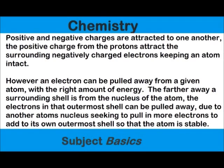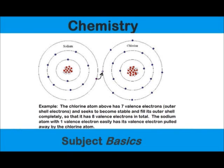However, an electron can be pulled away from a given atom with the right amount of energy, and the farther away a surrounding shell is from the nucleus, the electrons in that outermost shell can be pulled away or shared due to another atom's nucleus seeking to pull in more electrons to add to its own outermost shell. The sharing or donating of electrons results in a chemical bond.